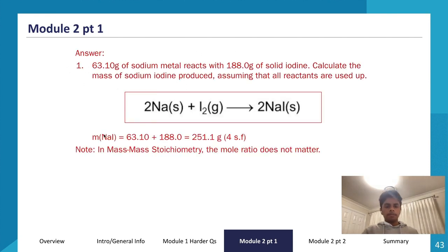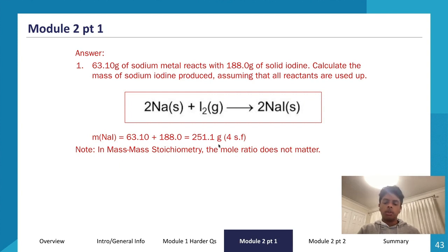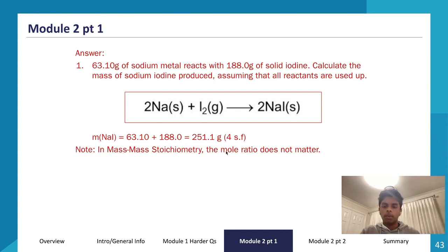The mass of NaI equals 63.10 + 188.0 = 251.1 grams to four significant figures. The molar ratio doesn't matter here because we're only using the law of conservation of mass to find mass directly. We'll talk about molar ratio a bit later and see how we implement it in questions.